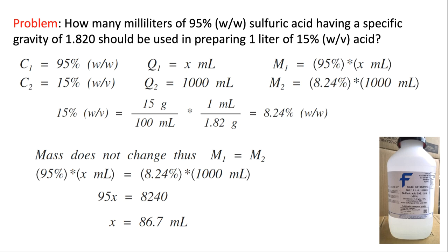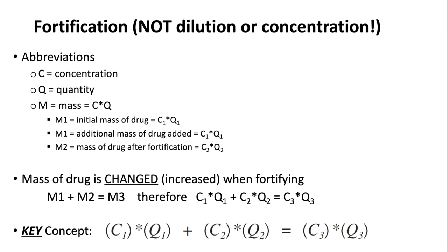That ends our last dilution example and takes us to our last topic in this lecture — fortification. With dilution the mass doesn't change when you add volume. With fortification it's different: you take an initial concentration and quantity and you add additional mass. You don't just change the volume — you change both the volume and the concentration by adding additional drug mass. So unlike dilution where M1 = M2, for fortification M1 plus M2 equals a new M3.